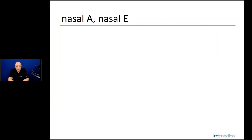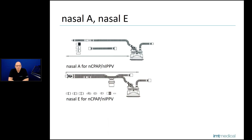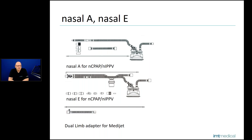For NIPPV and NCPAP with the MediJet in neonatal mode, there is also the possibility to use a single-limb circuit or a dual-limb circuit for the MediJet. When using a dual-limb or E circuit for the MediJet, keep in mind that you need the dual-limb adapter, because you can't connect the MediJet directly to the Y-piece of the circuit — you need this adapter and also the pressure line. This is very important. I get questions about this regularly. The dual-limb adapter can be ordered from our product catalog.